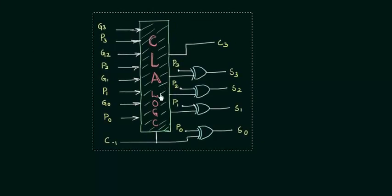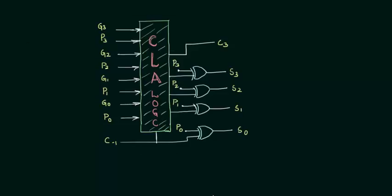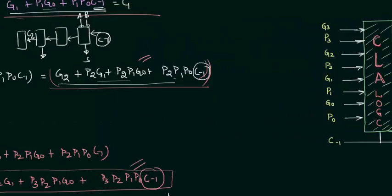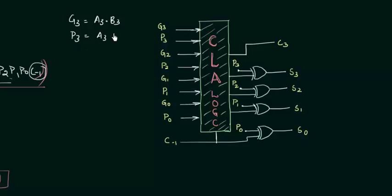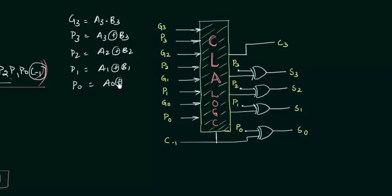The circuit has already been prepared. The CLA logic block contains all the equations we evaluated. It requires inputs g3, p3, g2, p2, g1, p1, g0, and p0. Recall that g3 equals a3 AND b3 (the generate term), and p3 equals a3 XOR b3 (the propagate term). Similarly, p2 equals a2 XOR b2, p1 equals a1 XOR b1, and p0 equals a0 XOR b0.